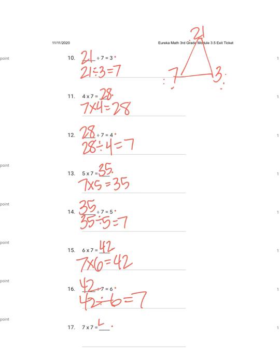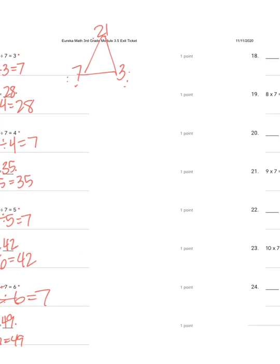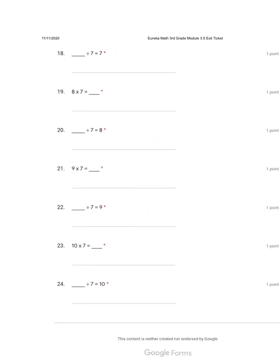Seven times seven is forty-nine. 'Miss it again and I'll beat you behind' — that is the riddle my third grade teacher taught me when I was in third grade, and I still remember it to this day. You can't really swap these because they're the same number. So seven times seven is forty-nine. Forty-nine divided by seven equals seven. That's the cool thing about that one — when you switch them, they're the same number, so it doesn't matter.